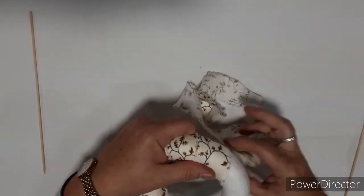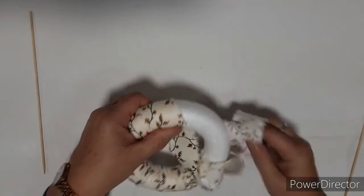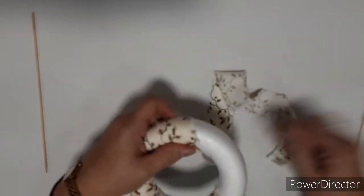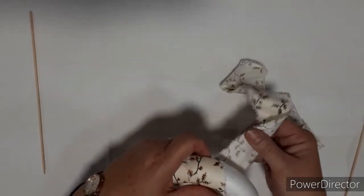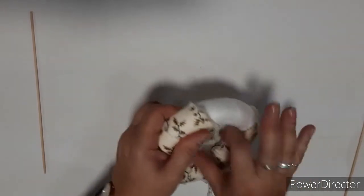Keep on going, tuck it through, right on round until you've covered the whole of the polystyrene ring.